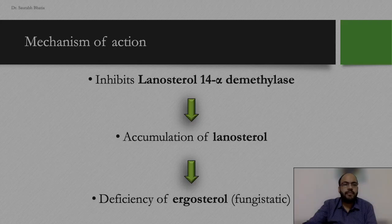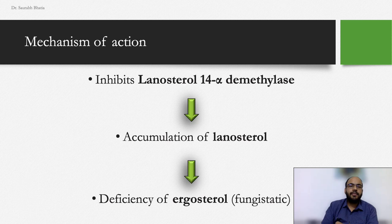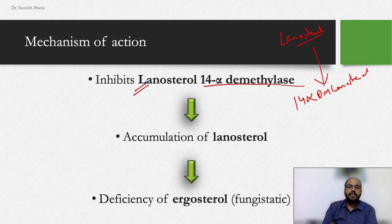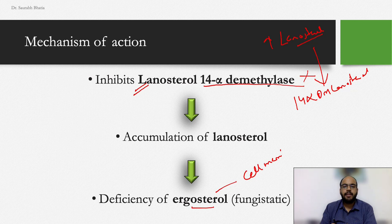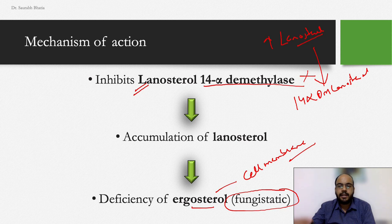To recap the mechanism of action: fluconazole inhibits lanosterol 14-alpha-demethylase, the enzyme required for the conversion of lanosterol to 14-alpha-demethyl lanosterol — one of the key steps in ergosterol synthesis. Blocking this conversion leads to increased lanosterol and decreased ergosterol. Deficiency of ergosterol, which is responsible for cell membrane activity in fungi, causes growth arrest. That is why fluconazole is a fungistatic drug.